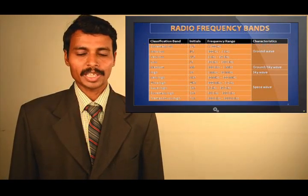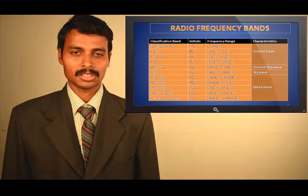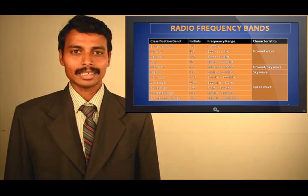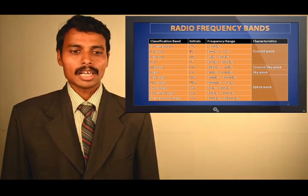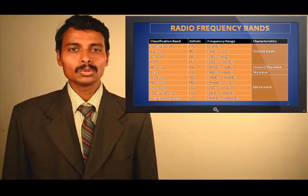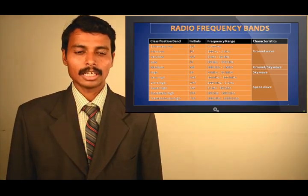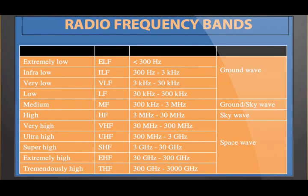The waves are propagated at many frequencies and classified based on those frequencies, starting from extremely low frequency to tremendously high frequency. For example, extremely low frequency has a range less than 300 Hz, and infrared has a frequency range from 300 Hz to 3 kHz. Classification is based on both frequency and wavelength.